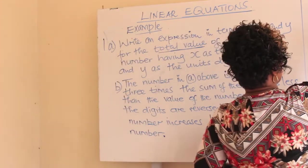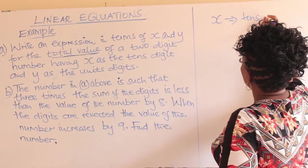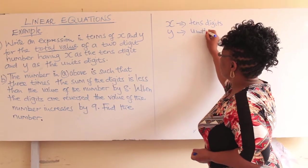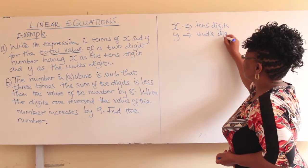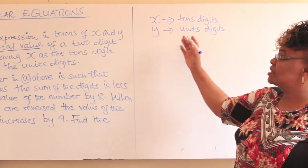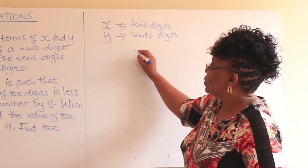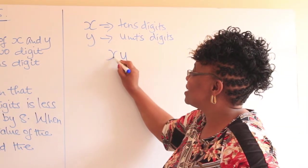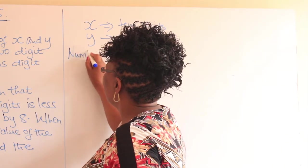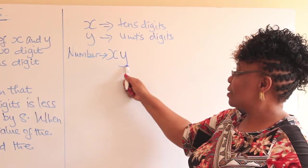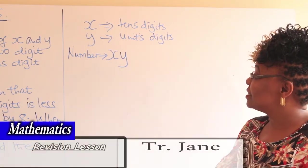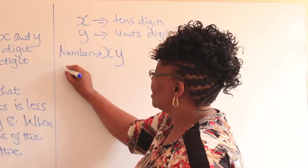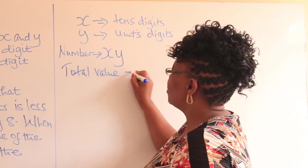We can write that x is the tens digit and y is the units digit. This is the place value. So how do we write this number using the two digits? We write y in the units position (ones digit) and x in the tens position. This is our number.